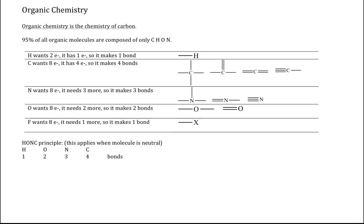Hydrogen, being in row one, wants to have access to two electrons. It has one electron on its own, so it makes one bond to have its duet. Carbon, nitrogen, oxygen, fluorine — all the halogens — want eight electrons; they want the octet. Carbon has four, so it makes four bonds in an effort to get its octet. It can have four single bonds, two single bonds and a double bond, two double bonds, or a triple bond and a single bond.